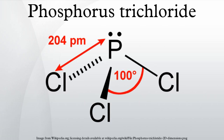PCl3 is toxic, with a concentration of 600 ppm being lethal in just a few minutes. PCl3 is classified as very toxic and corrosive under EU Directive 67/EEC, and the risk phrases R14, R26/28, R35, and R48/20 are obligatory. Government agencies in the United States have set occupational exposure limits for PCl3. OSHA has set a permissible exposure limit at 0.5 ppm over a time-weighted average of 8 hours, while NIOSH has set a recommended exposure limit at 0.2 ppm over a time-weighted average of 8 hours.